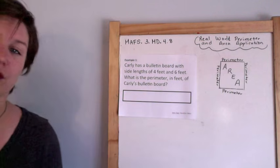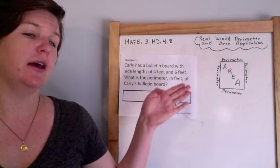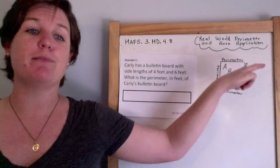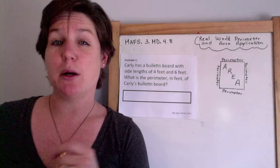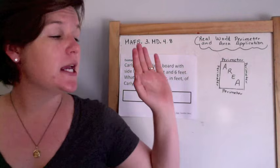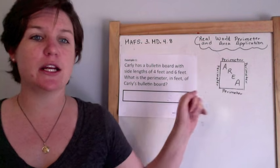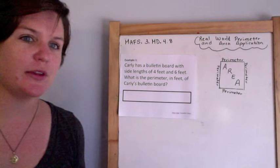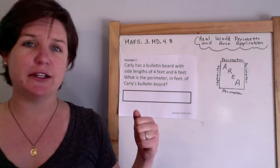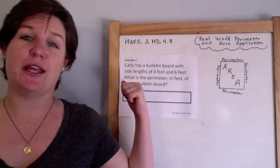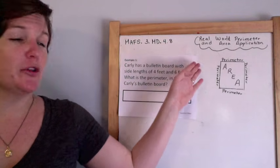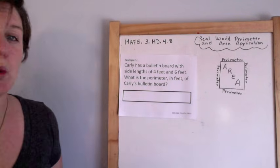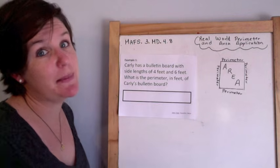Real world perimeter and area application. Remember that the perimeter is determining the length of the border, so you might have to add up all the sides. The area is uncovering whatever is being covered inside. You can count up the squares for area, multiply the length times the width, or add all of the boxes.